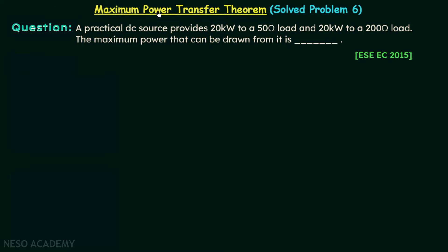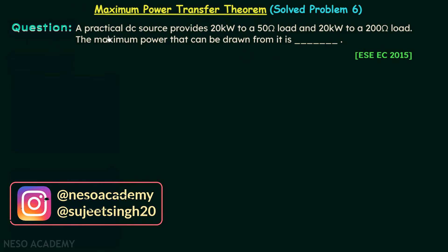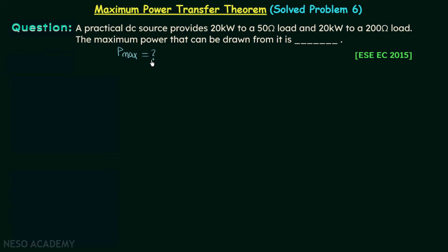We are going to solve problem number 6 on the maximum power transfer theorem. A practical DC source provides 20 kilowatts to a 50 ohms load and 20 kilowatts again to a 200 ohms load. We are required to find out the maximum power that can be drawn from this practical DC source.